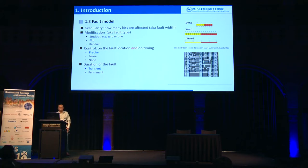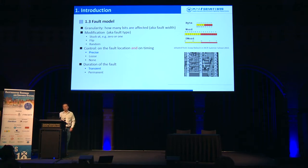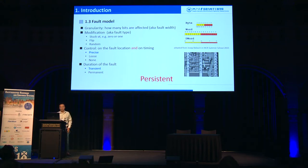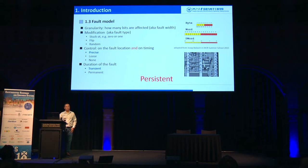According to durations, there are normally two types. One is called transient faults — it lasts a very short while, normally one operation in one round. Another is called a permanent fault, which will damage the circuit. In this paper, we propose a new fault type called a persistent fault. Here the fault will last a little bit longer, causing multiple runs or even multiple encryptions.